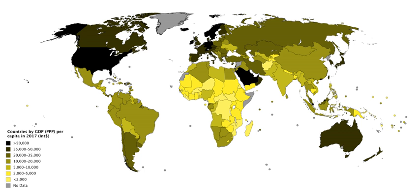Exports (X) represent gross exports. GDP captures the amount a country produces, including goods and services produced for other nations' consumption, therefore exports are added. Imports (M) represent gross imports. Imports are subtracted since imported goods will be included in the terms G, I, or C, and must be deducted to avoid counting foreign supply as domestic. Note that C, G, and I are expenditures on final goods and services; expenditures on intermediate goods and services do not count.